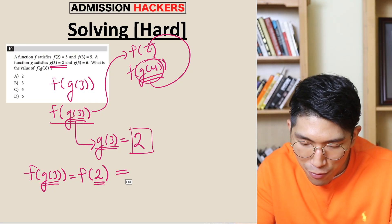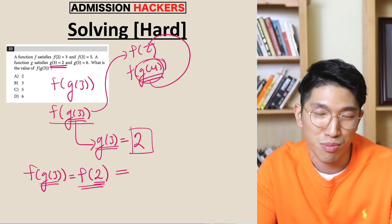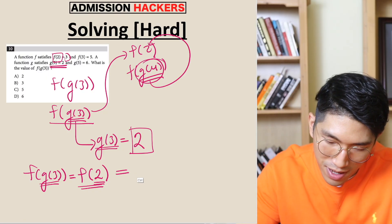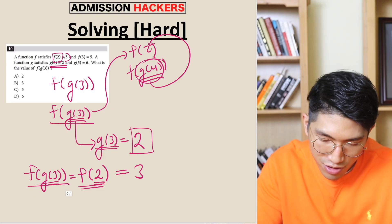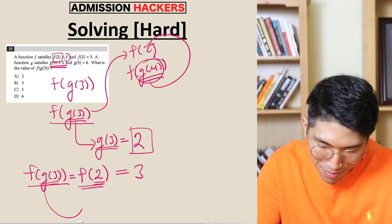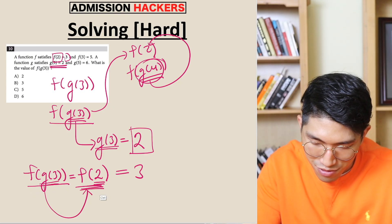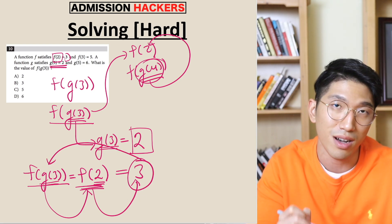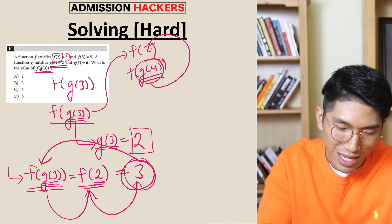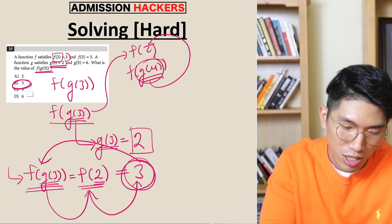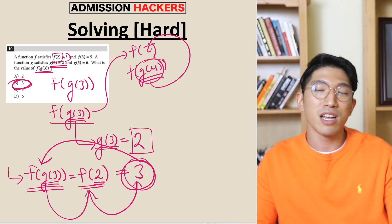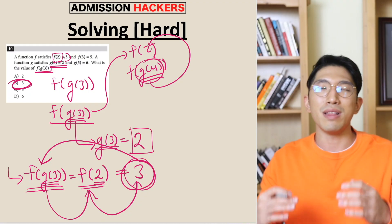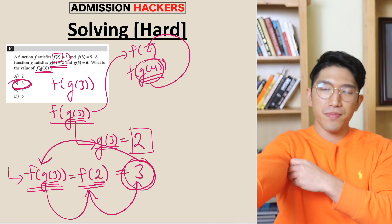If we can find out what f(2) is, that's going to be our answer. The question tells us that f(2) = 3. So f(g(3)) is the same thing as f(2), and f(2) is the same thing as 3, which means our answer is choice B. This one again came back to the definition of the function and your ability to interpret a function notation.